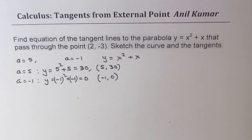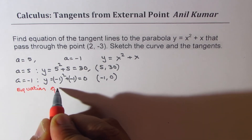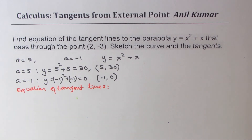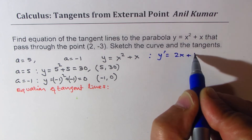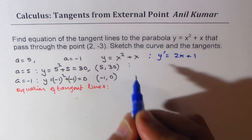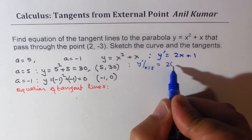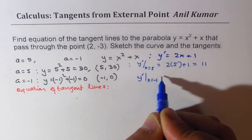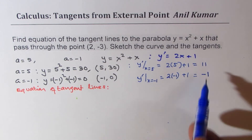Now let's calculate the slopes at these points. Using y′ equals 2x + 1: for x equals 5, the slope is 2(5) + 1 equals 11. For x equals minus 1, the slope is 2(−1) + 1 equals minus 1. These are the two slopes.